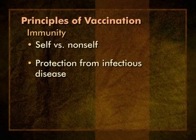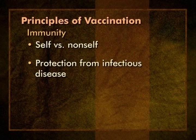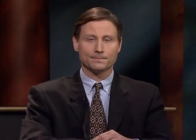For the purposes of this program, we will use a narrower concept of immunity: protection from infectious disease—the ability to recognize and eliminate infectious agents such as viruses and bacteria, and to prevent infection with these agents in the future. There are two basic types of immunity, active and passive. It is possible for both types to be present simultaneously. We will discuss both, starting with active immunity.